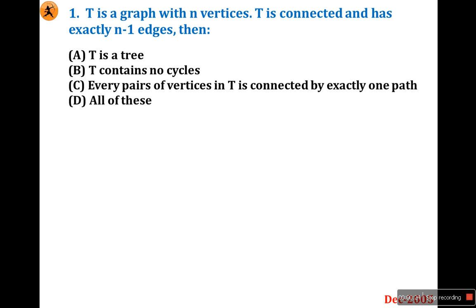T is a graph with n vertices. T is connected and has exactly n-1 edges. If you know the definition of a tree, you can answer this easily — it's a straightforward question.